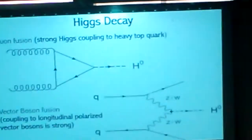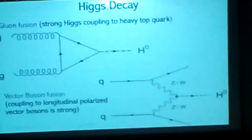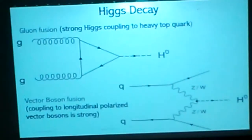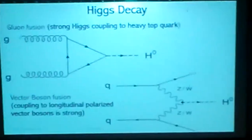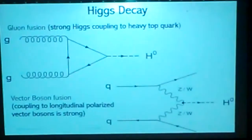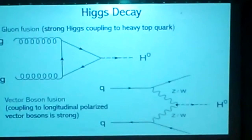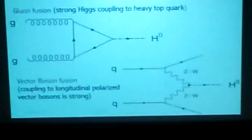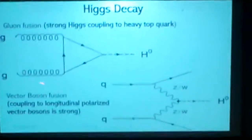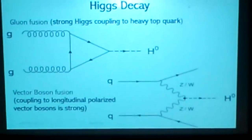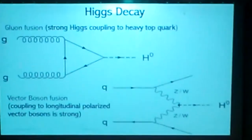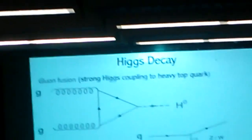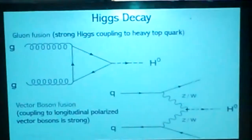What does a Higgs event look like? You have these gluons — gluons are what's inside a proton. You have these protons going very quickly, and gluon fusion is one of the most common production modes because the Higgs has a strong coupling. You also have vector boson fusion, which is the Higgs coupling to vector bosons — the Z and W bosons. That's what a Higgs production event looks like.